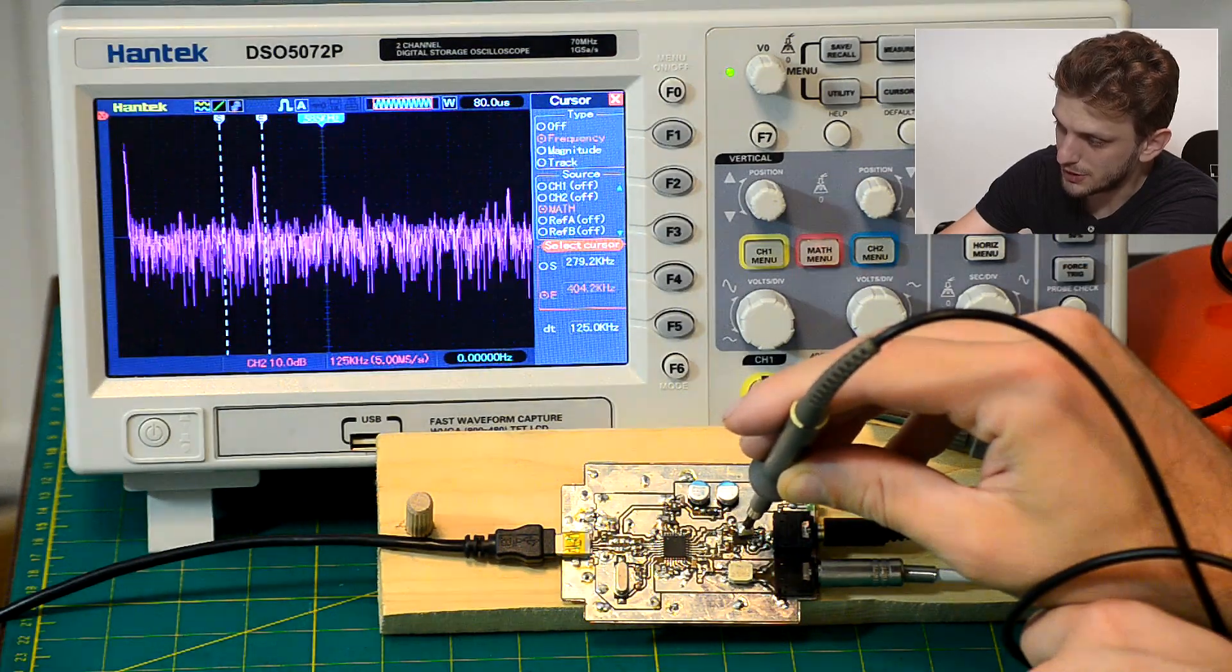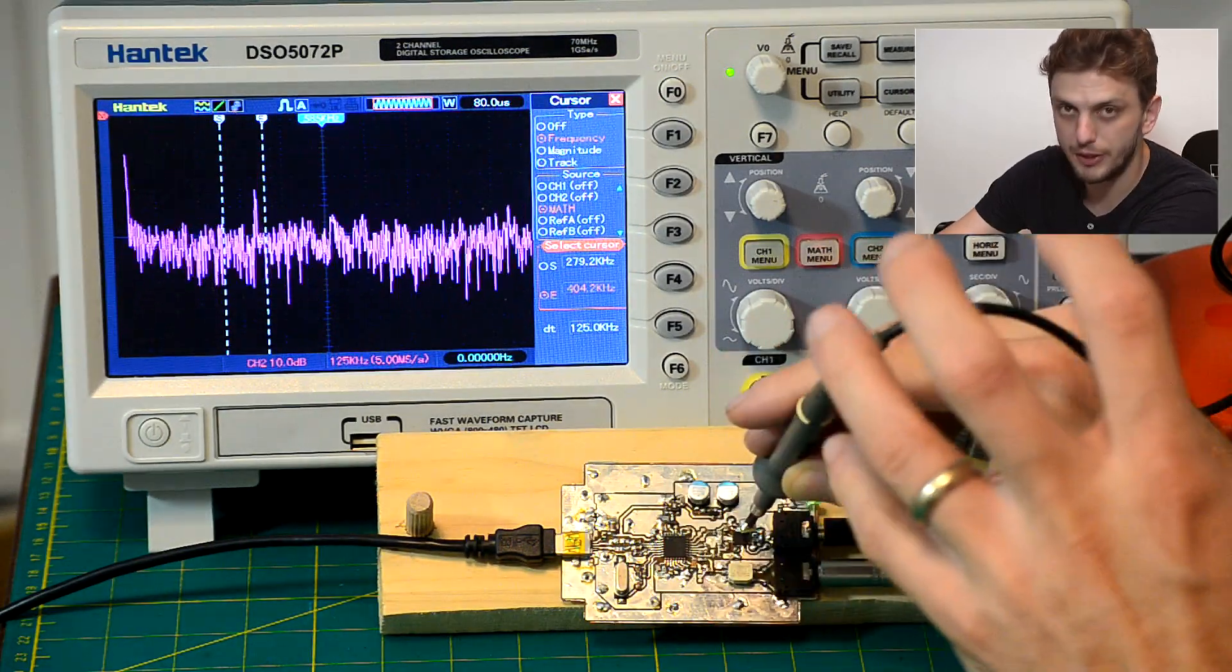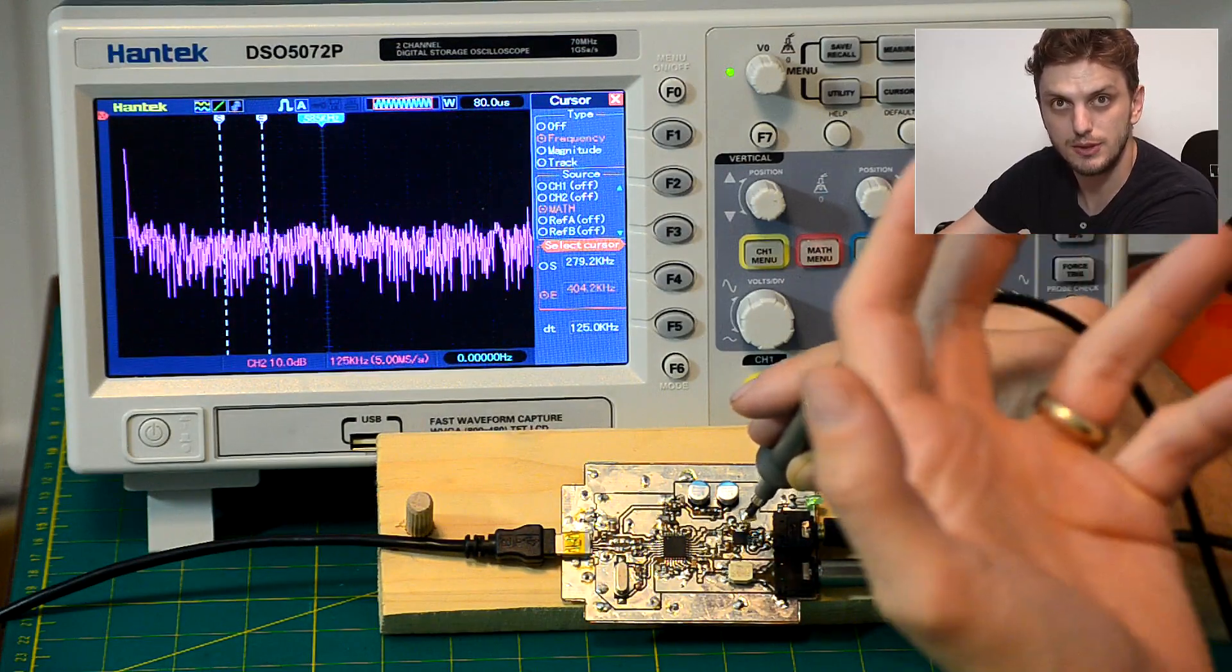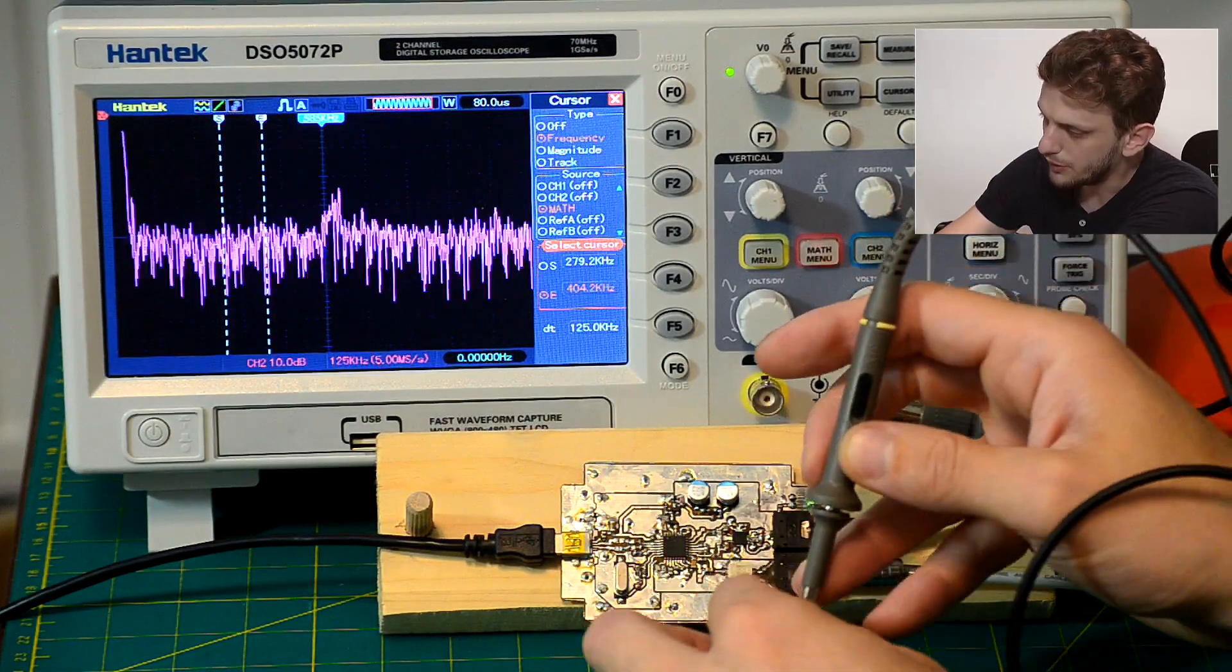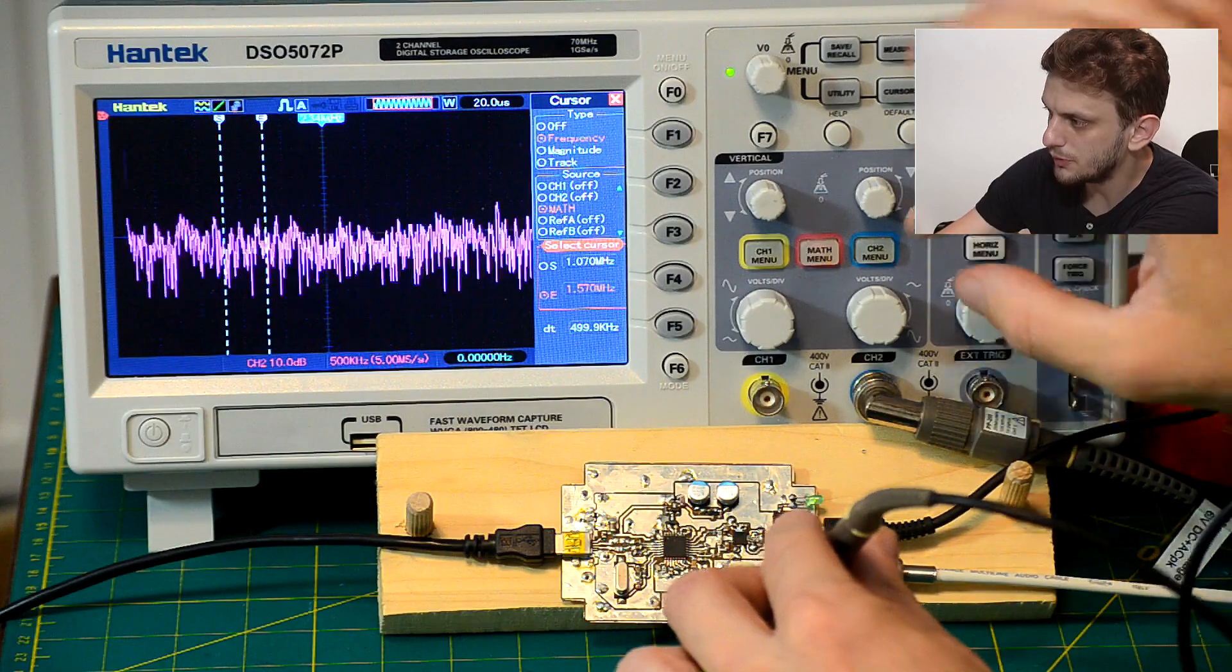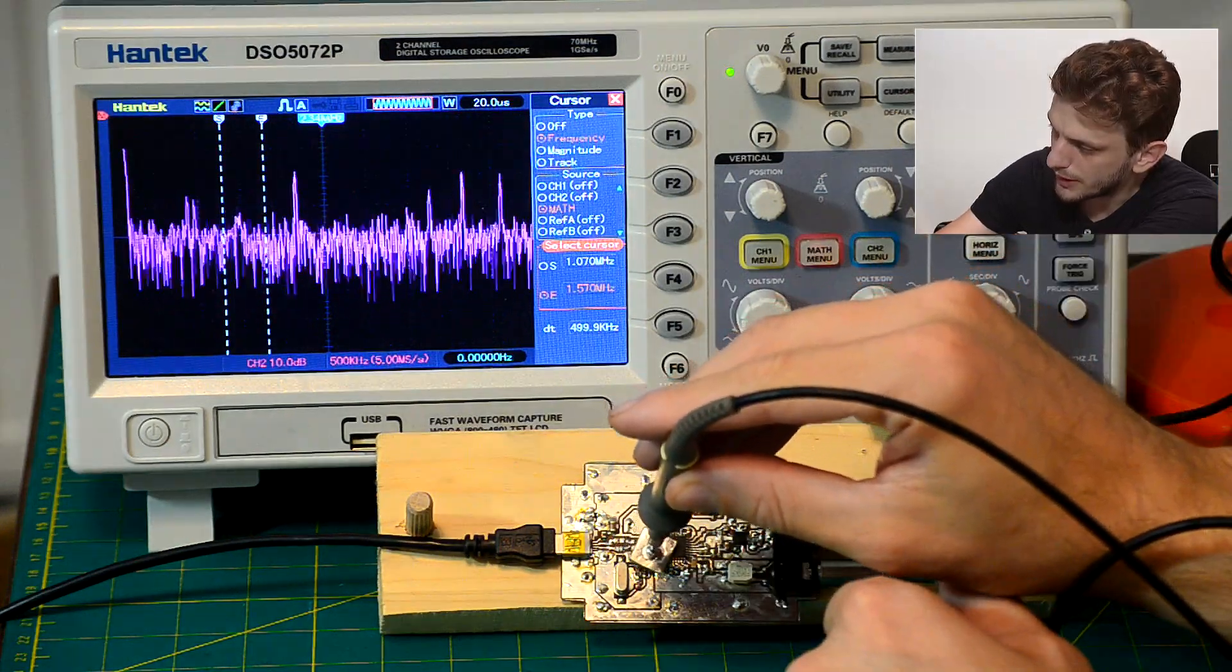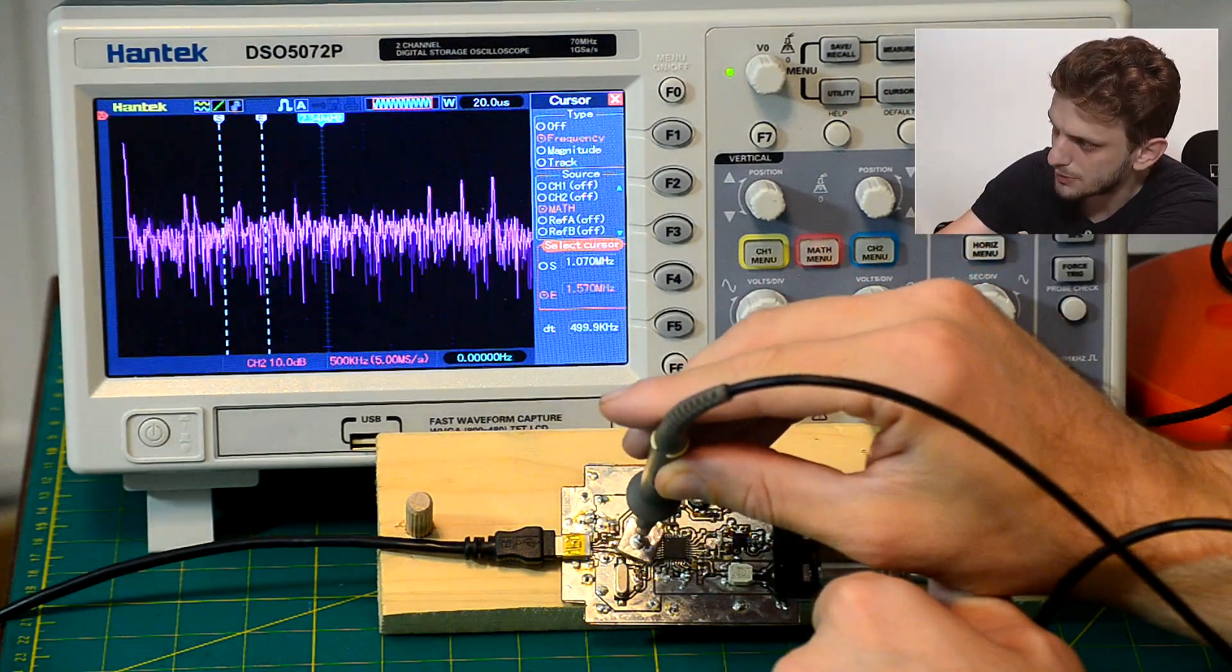So using these probes, I can pinpoint the upper area of the chip as having the most emissions. Now if we look in a different frequency range, go over to the IC a bit, we see some spikes appearing.